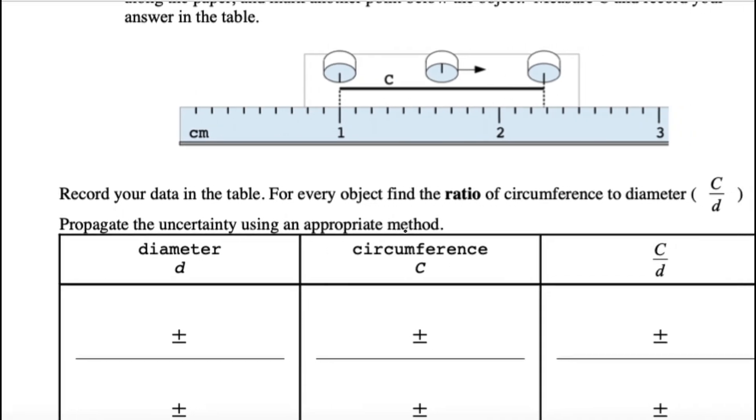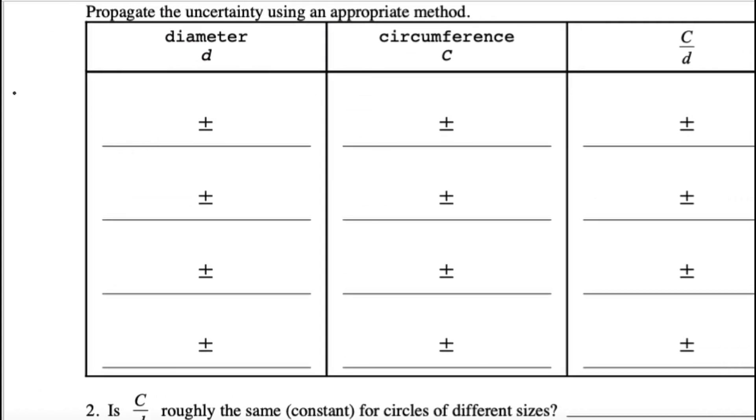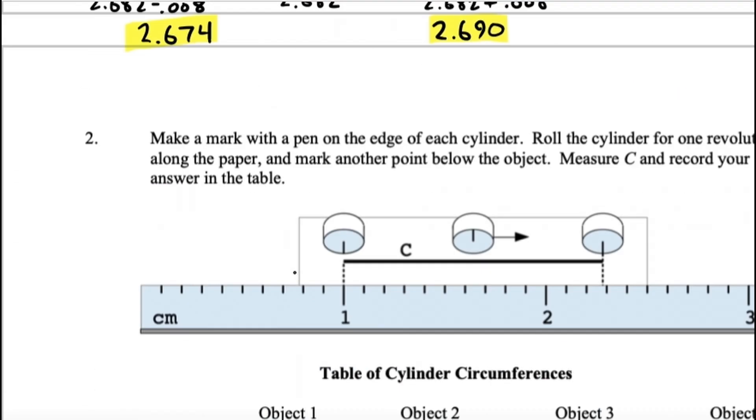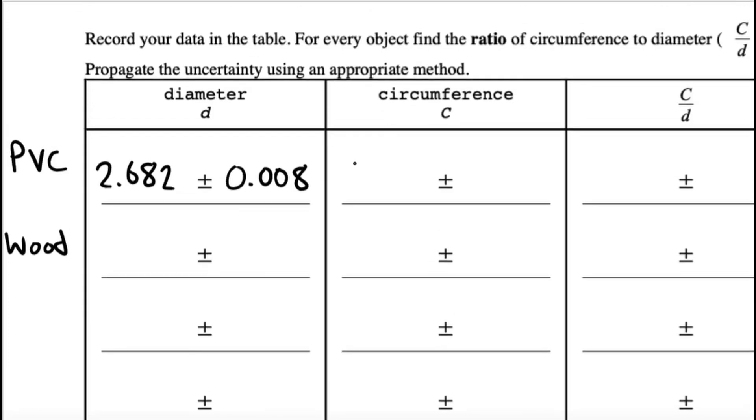So, the second part asks you to pair diameters of objects with their circumferences. You don't have to do any new measurements for this part. You actually just have to transfer your old measurements to this table. So, each row is going to represent an object. So, you could put, let's say, your PVC here at the top. And, then put your wood on the second row. So, when it came to the diameter of the PVC, it was 2.682 plus or minus 0.008. You just take that value from your earlier data table. It's just this value right here.